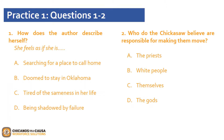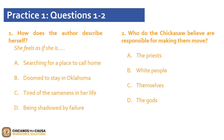Now that we have read the Practice 1 piece, let's answer the following questions. Question one asks: how does the author describe herself? We are looking to finish the sentence — she feels as if she is... We have options: A, searching for a place to call home; B, doomed to stay in Oklahoma; C, tired of the sameness in her life; or D, being shadowed by failure. The answer is A, searching for a place to call home. The author states this directly in the first two lines and in the last paragraph: 'And I am still moving, looking for a home. I don't know if I'll ever escape my tradition, my past.'